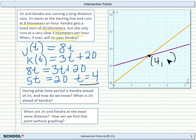So let's go ahead and put it in for the first equation, because that will be easiest. So we can say that J of 4 equals 8 times 4 equals 32.